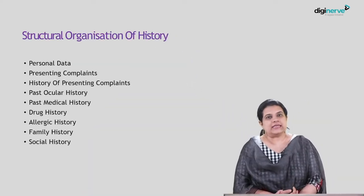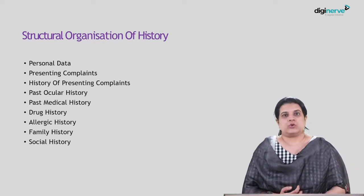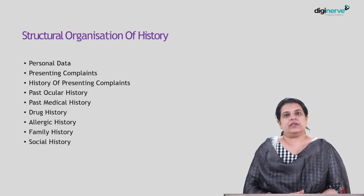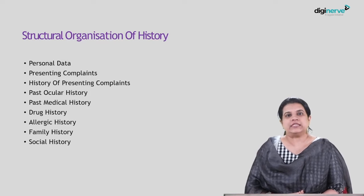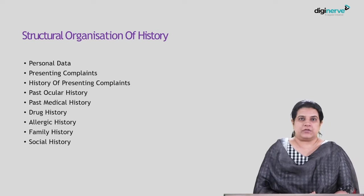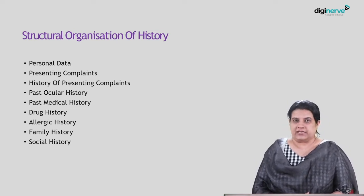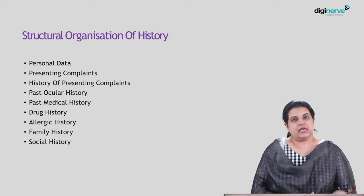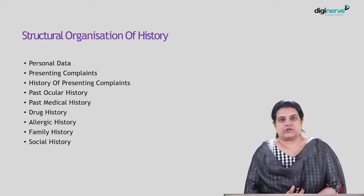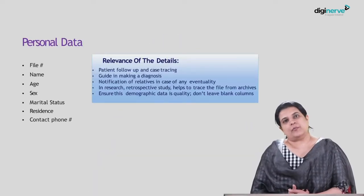You need to organize the history patients give. Most details are relevant, but some can be irrelevant, and it is important to filter those out to stay on course for making the correct diagnosis. You need to know the personal data, the presenting complaints, history of presenting complaints, past ocular history, history of ocular medications, medical history, drug history, allergic history, and family as well as social history. We will look at each of these components individually.